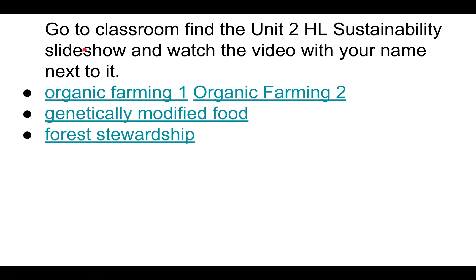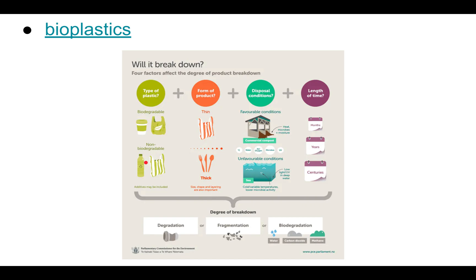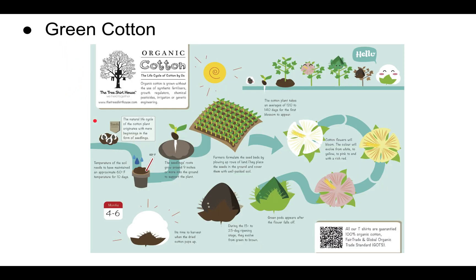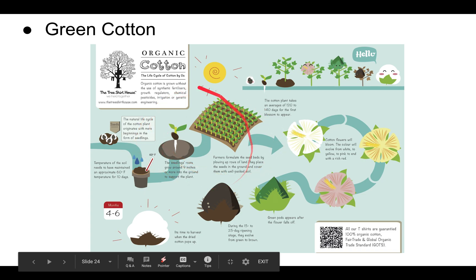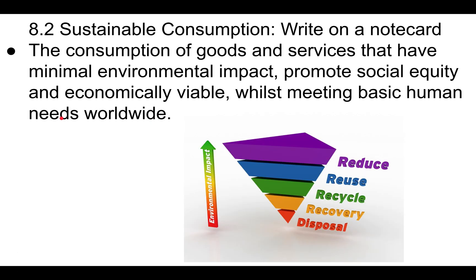The IB also wants you to look into organic farming, genetically modified food, and forest stewardship — there are articles on those you should check out. Bioplastics are also important for sustainability. Green cotton is another example of a sustainable product — it uses less pesticides and herbicides and employs sustainable methods to grow the cotton. And that's it for today.